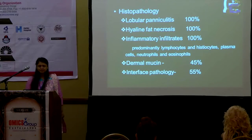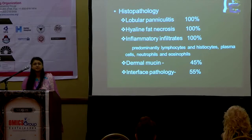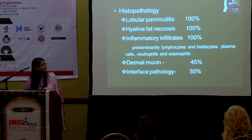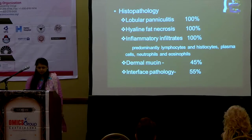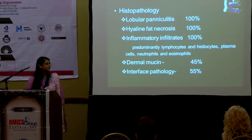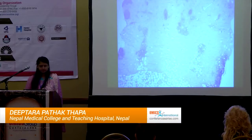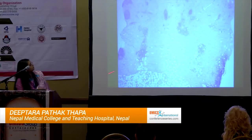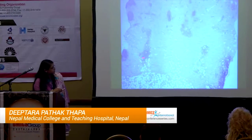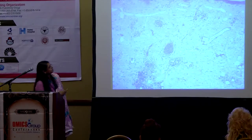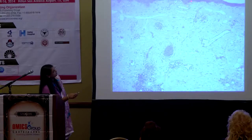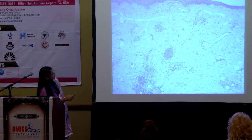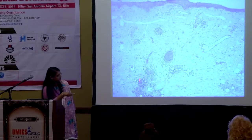In our series, lobular panniculitis, hyaline fat necrosis, and inflammatory infiltrate were found in all 11 patients (100%). The inflammatory infiltrate predominantly consisted of lymphocytes, histiocytes, and plasma cells, followed by neutrophils and eosinophils. Dermal mucin was found in 45% and interface pathology in 55%. Histopathological slides demonstrate inflammation mainly at the deep dermal and subcutaneous level, with vacuolar degeneration at the basement membrane zone and telangiectasia with perivascular inflammatory infiltrate extending to the subcutaneous level.